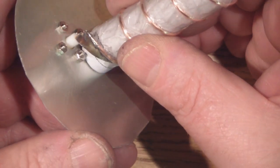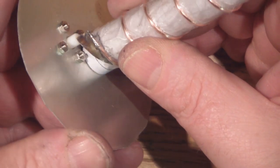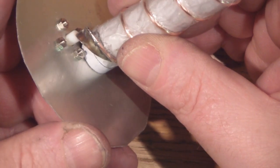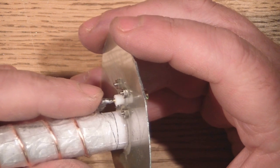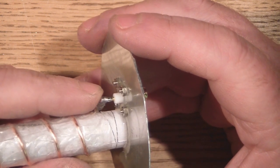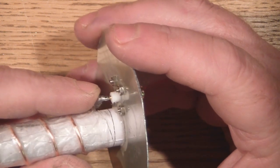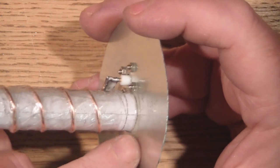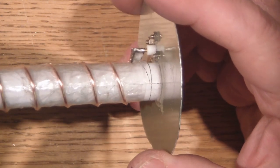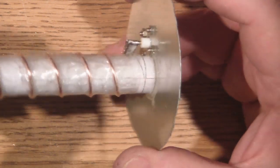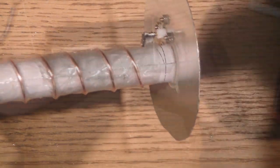I've soldered that up onto the center connector of the SMA panel mount, so we've got a nice connection there. I've epoxied this on here—obviously this is the weakest part of the antenna at the moment, so we're going to have to strengthen that.